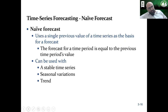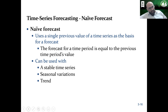Starting with the naive forecast — this is very simple and easy. It uses a single previous value of the time series as the basis for forecasting. We look at the time period equal to the previous time period value and say: this is the forecast. The naive forecast can be used when we have a stable time series, when we have seasonal variation, and when we have trends. For example, if last winter you sold 1,000 mittens, you'd expect to sell 1,000 mittens again this winter. You go to the same period in the past, find out how much you sold, and expect that demand to happen again.